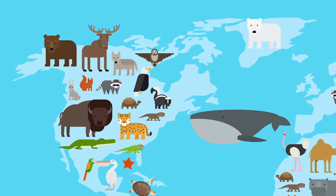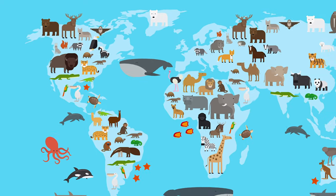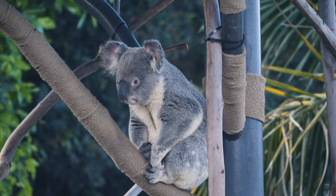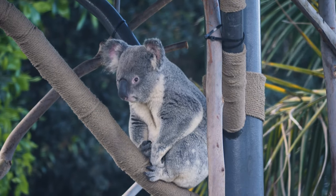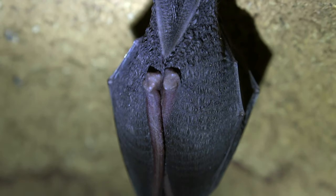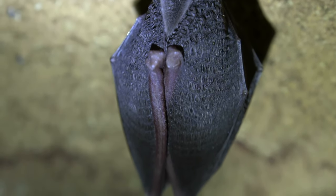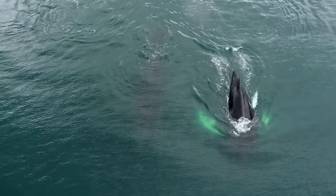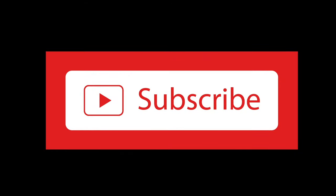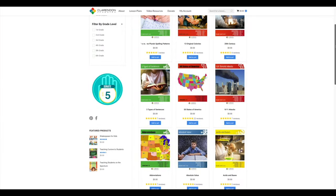Mammals make up just one group of the many types of animals in the world. Even though mammals share many characteristics, each is also unique — from the tiniest bat to the biggest whale. Thanks for following Clarendon Learning. Be sure to subscribe for more free resources and check us out at clarendonlearning.org.